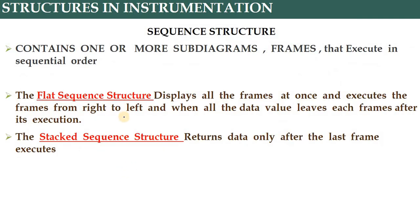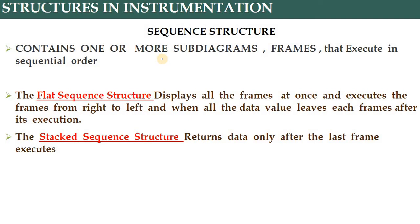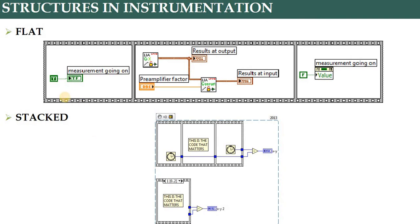The second type is the sequence structure, which has two parts: flat sequence and stacked sequence. In a case structure only one sub-diagram is used, but in sequence structures one or more sub-diagrams called frames are used. Flat sequence displays all frames at once and executes them from left to right, returning data only after the last frame executes — for example: measurement, then this operation, then the next one, then output.